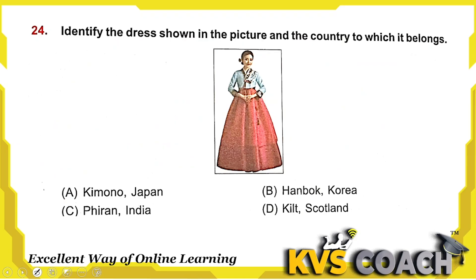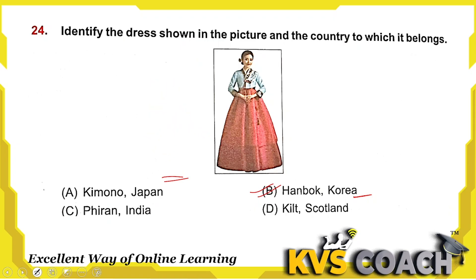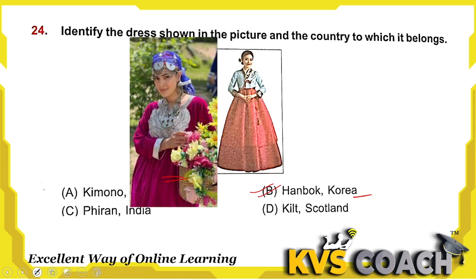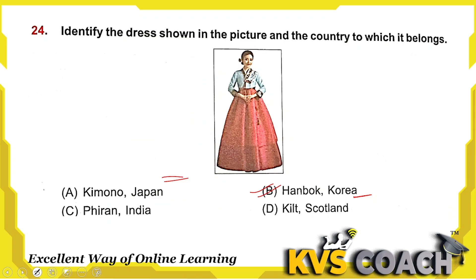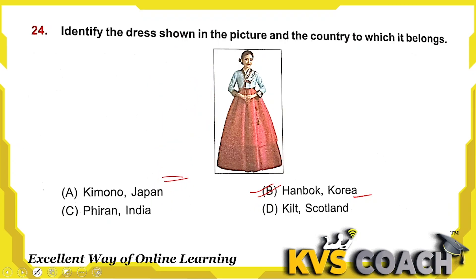Next: identify the dress shown in the picture and the country it belongs to. The dress is Hanbok and it is from Korea — option B is the right answer. Kimono is the Japanese dress. Firan is the traditional dress of Kashmir, India. Kilt is from Scotland. So the right answer for the given picture is Hanbok, Korea — option B.